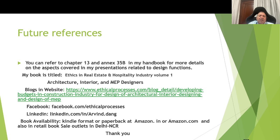There are a couple of other unethical activities which designers or function teams can add to these lists — these are just a few examples given. You can refer to Chapter 13 and Action 35B in my handbook for more details on the aspects covered in this presentation; there is also a template for making the budget in that book. You can also refer to the website article on developing budgets in the construction industry for design of architecture, interior, and MVP. The book is now available in Kindle format or paperback on Amazon.com and Amazon.in, and physical copies are also available at sales outlets. Thank you.